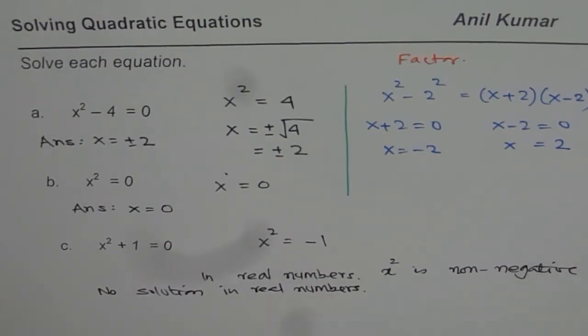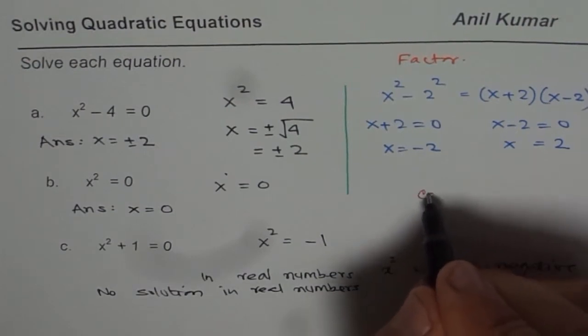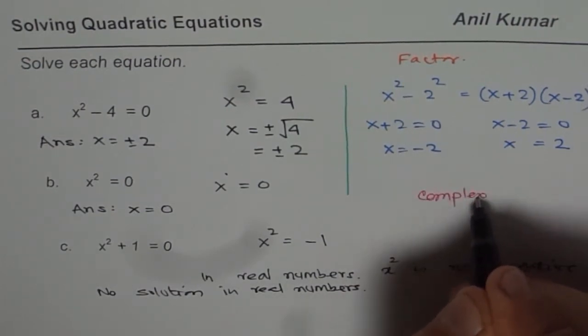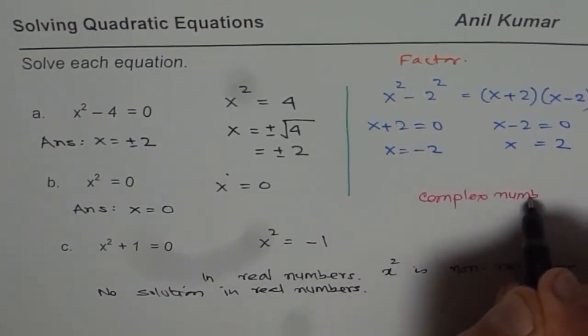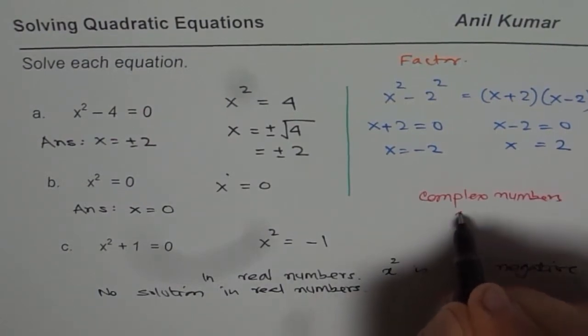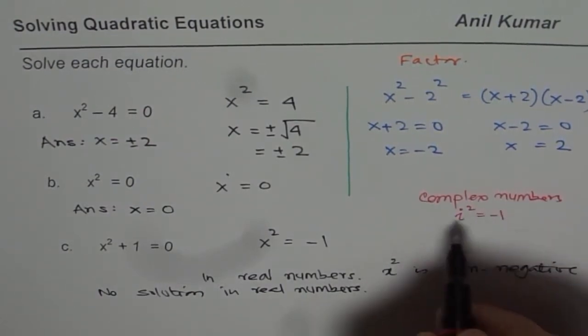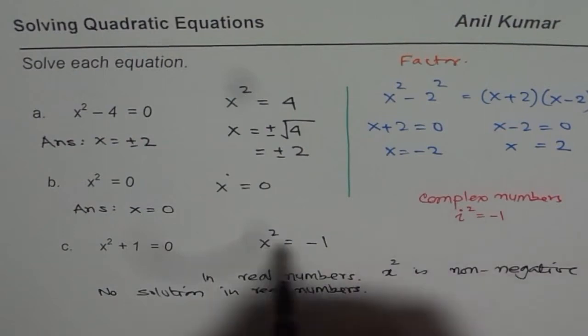Soon we will learn complex numbers and in complex numbers, it does have two solutions. So for those of you who are working with complex numbers, in the domain of complex numbers, we know i square is minus 1.